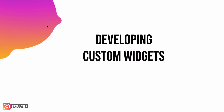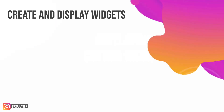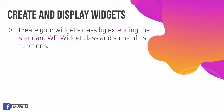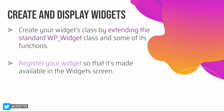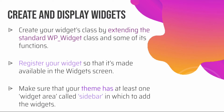When developing custom widgets, the first thing you do is create your widget class. The second step is to register your widget so that it's available in the widget screen. Lastly, you need to make sure your theme has at least one widget area, called a sidebar, registered and displaying properly.